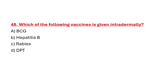Question 48: Which of the following vaccine is given intradermally? Option A: BCG. Option B: Hepatitis B. Option C: Rabies. Option D: TPT. Correct answer is Option A: BCG.